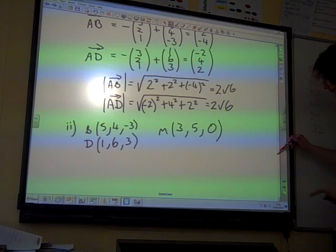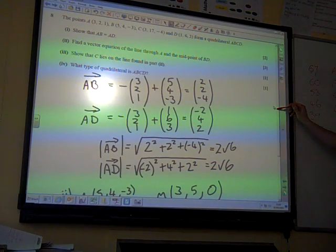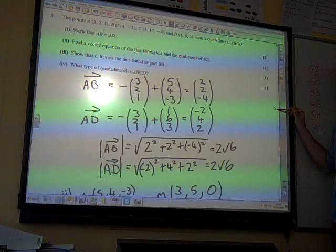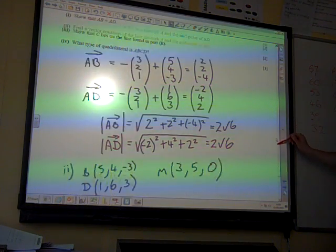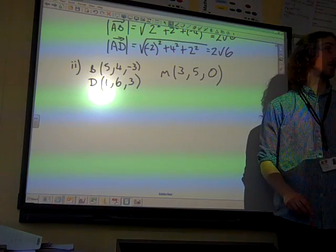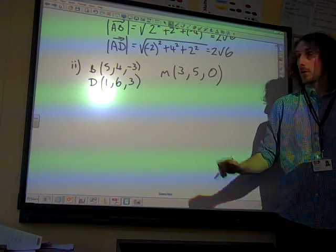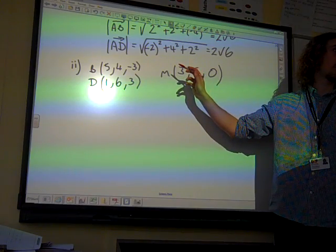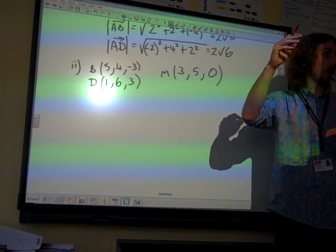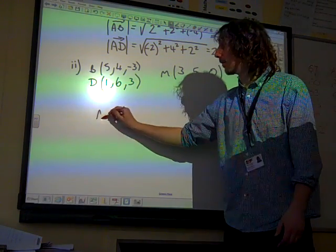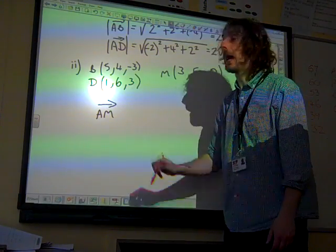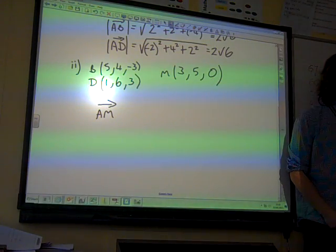That's it. Well, no, hang on. That's the midpoint of BD. We need to find a vector equation of the line through A and the midpoint of BD. So this vector equation is going to go through A and that point. So we need to know for our direction, we need to know the direction vector from A to this midpoint that we just established.